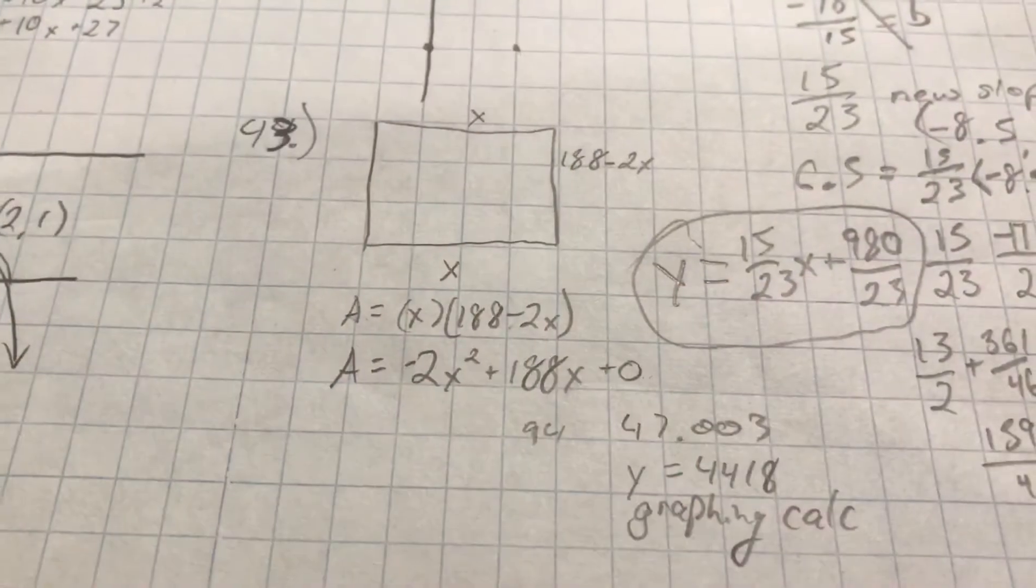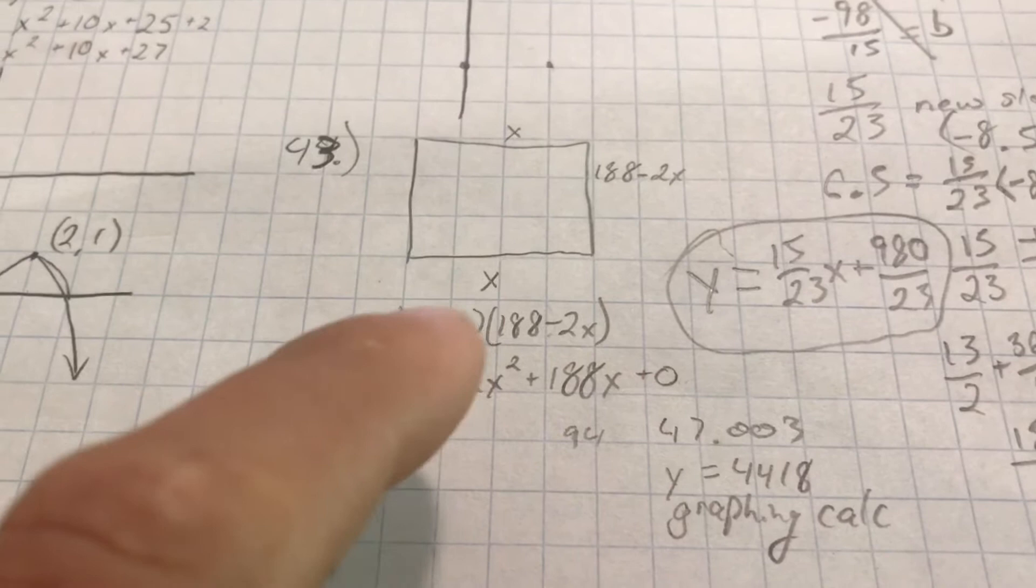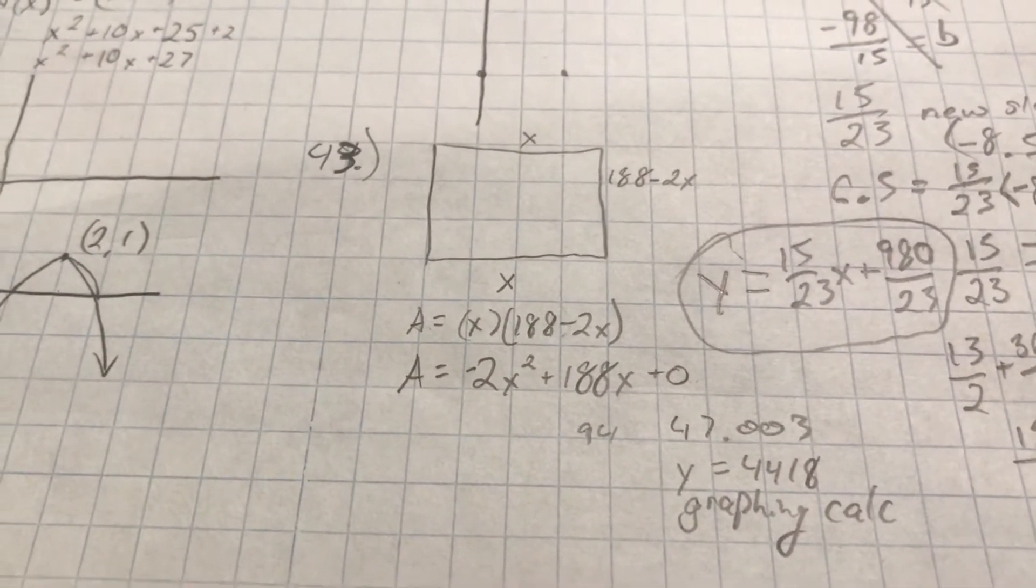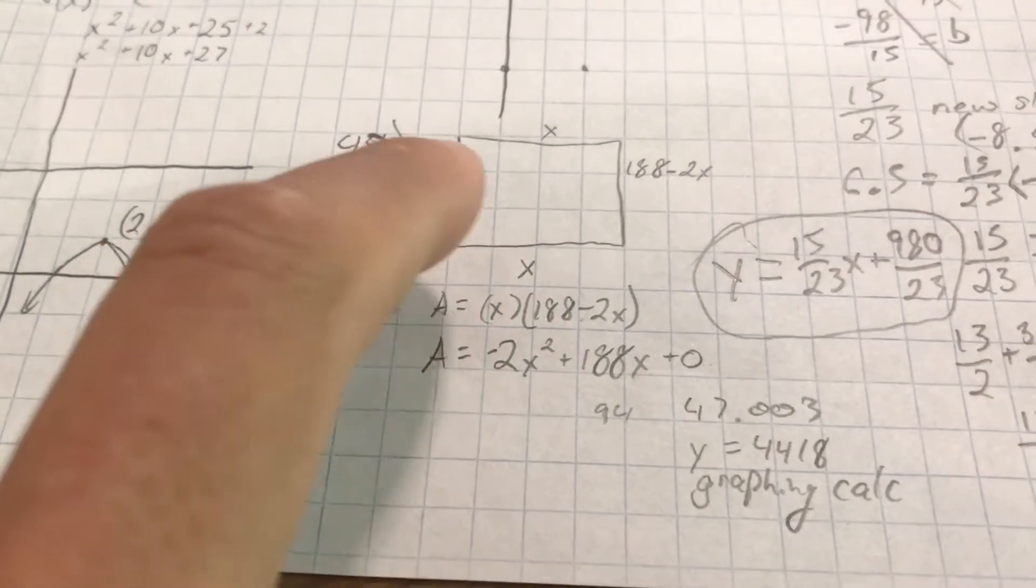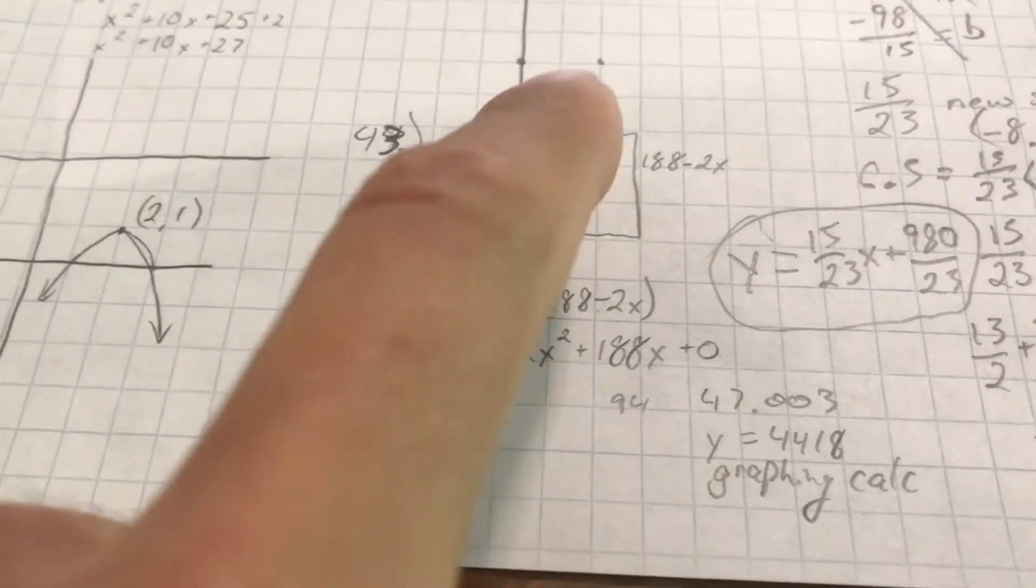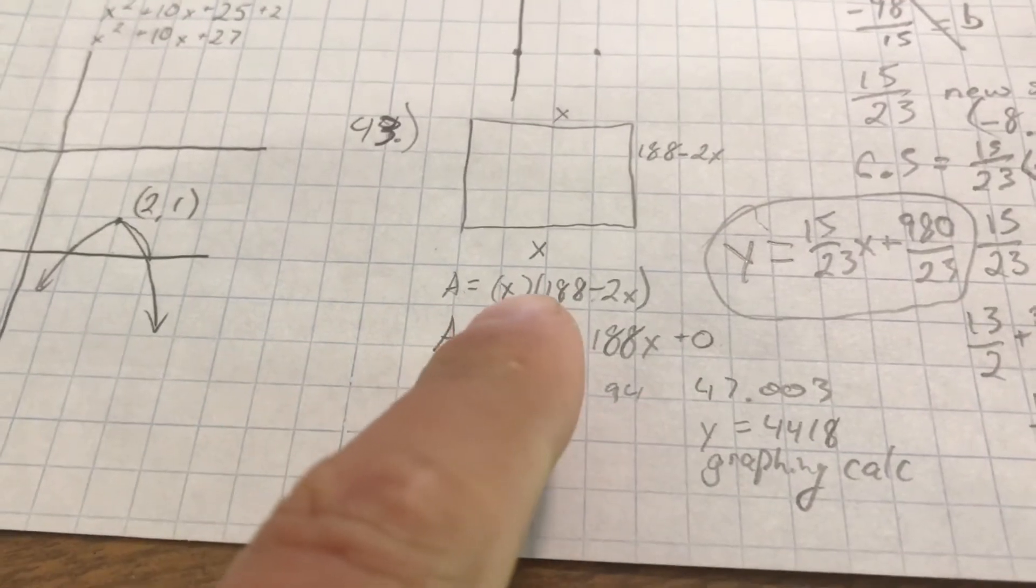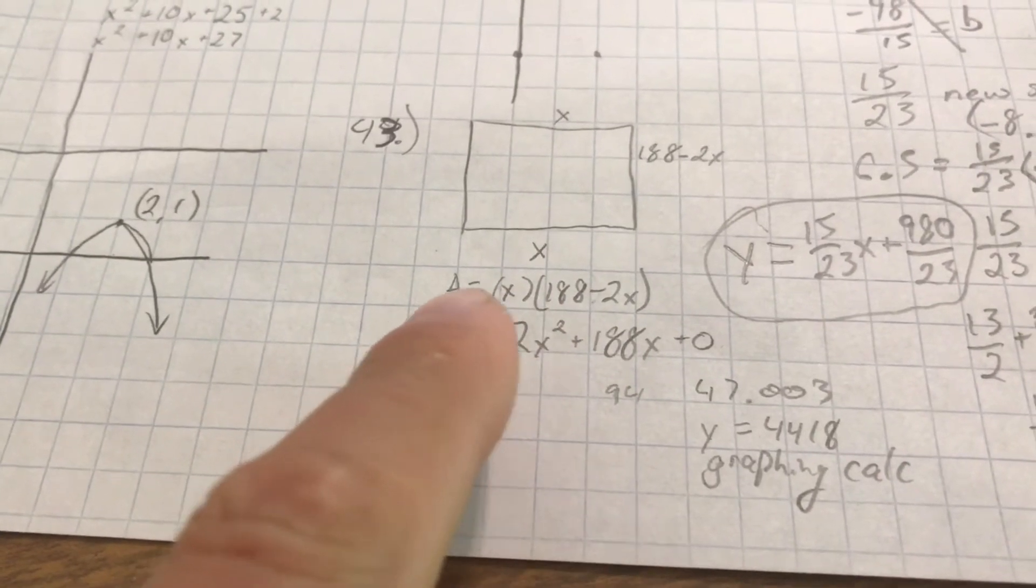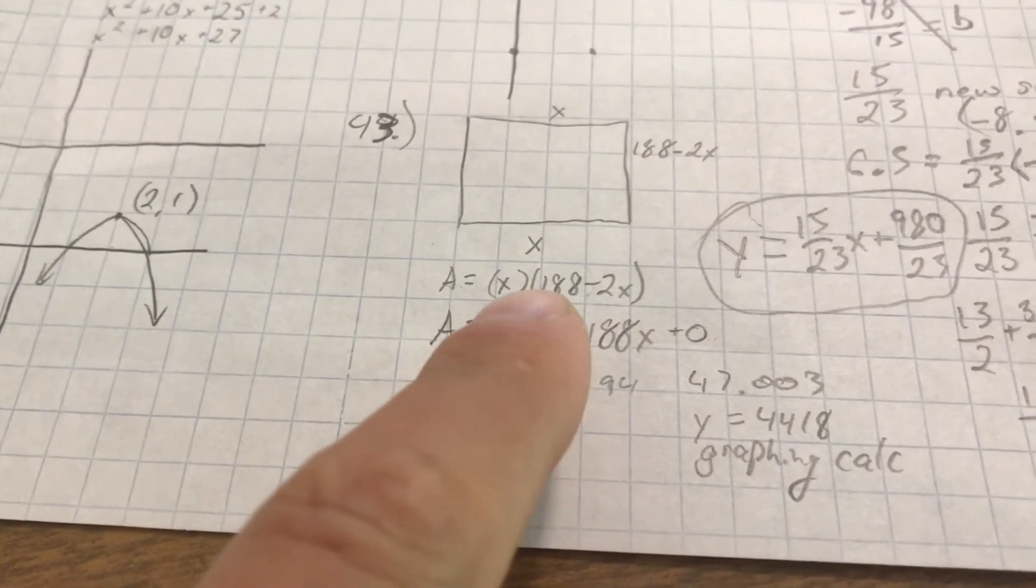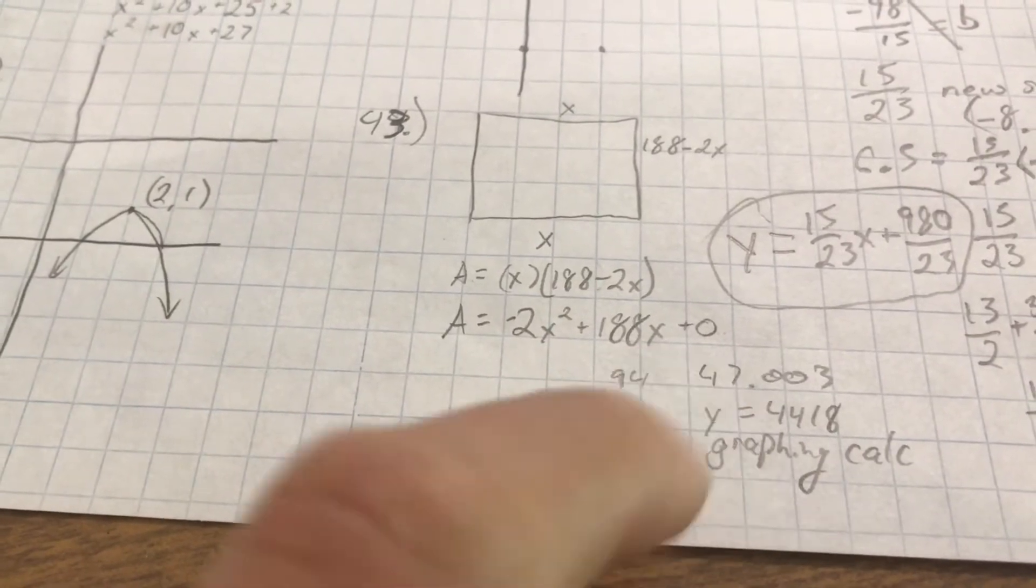So this is the drawing I did right here. I have the rectangle. I know that one is going to be x. And I know that what I have in total is 188 yards. So I know that all I'm going to have left is 188 minus whatever this is, is going to be what I'll have on either side of here. So I said area is equal to x times that value. From there, I foiled that out to get negative 2x squared plus 188x plus 0.